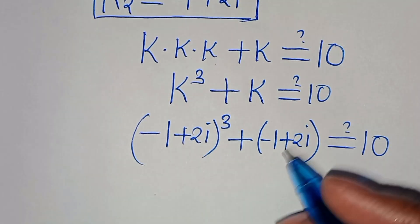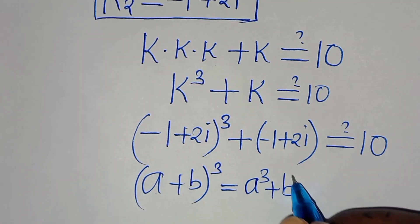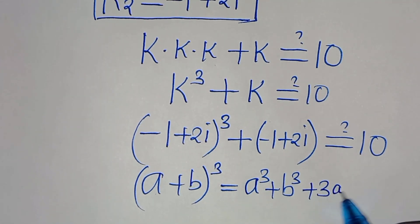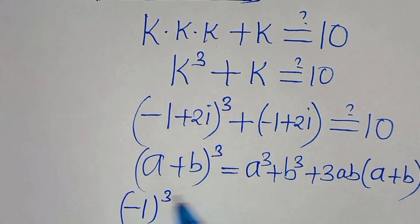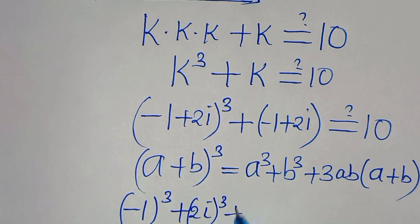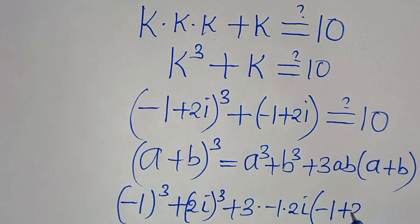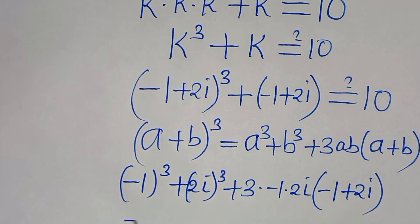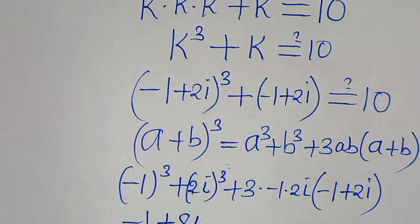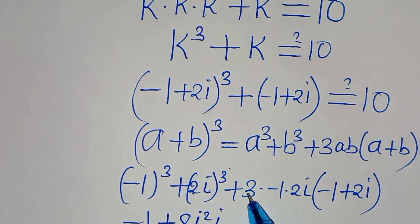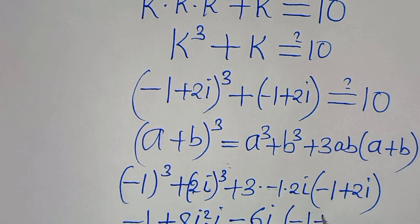Now minus 1 plus 2i to the power of 3 is in the form of (a + b) to the power of 3, which we can express as a to the power of 3 plus b to the power of 3 plus 3ab into (a plus b). So we have minus 1 to the power of 3 plus 2i to the power of 3, then plus 3 times minus 1 times 2i into the parenthesis minus 1 plus 2i. Minus 1 to the power of 3 is minus 1; 2 to the power of 3 is 8; i to the power of 3 is i squared times i. Then 3 times minus 1 times 2i is minus 6i, into the parenthesis minus 1 plus 2i.